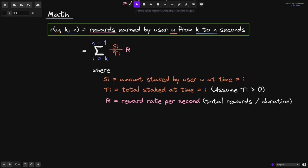This term here, s sub i divided by T of i times R, will give us the amount of rewards earned by this user in one second, and we sum this up for the duration from seconds i equals k to n minus 1. And that is how we calculate the amount of rewards earned by user u from seconds k to n.